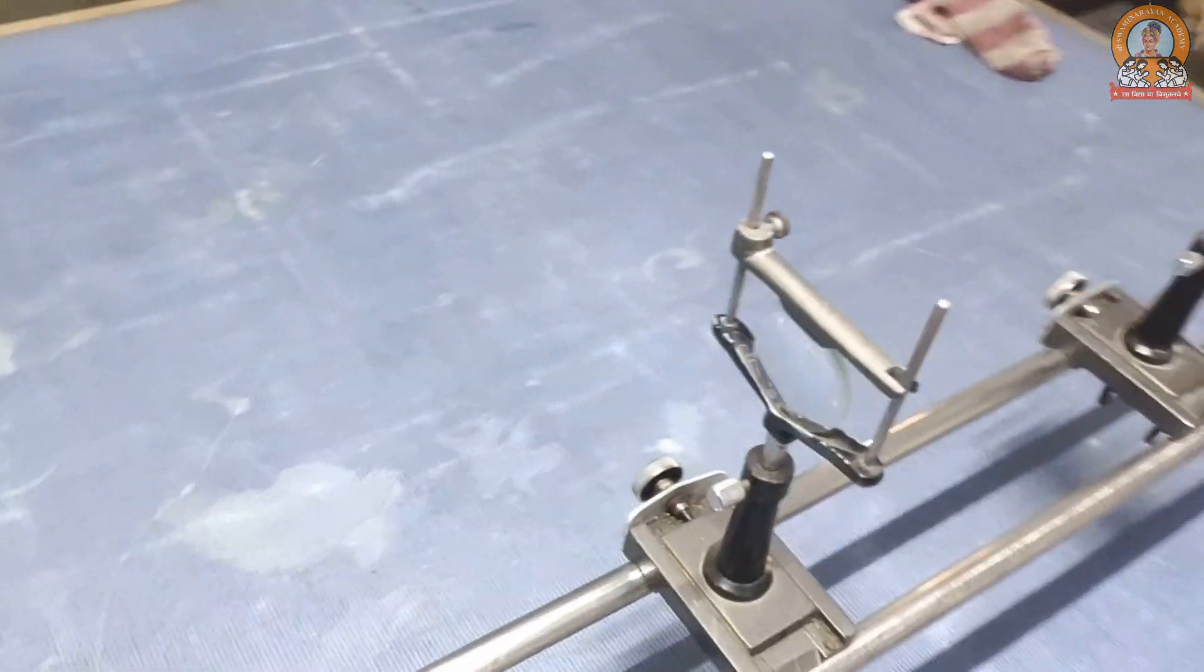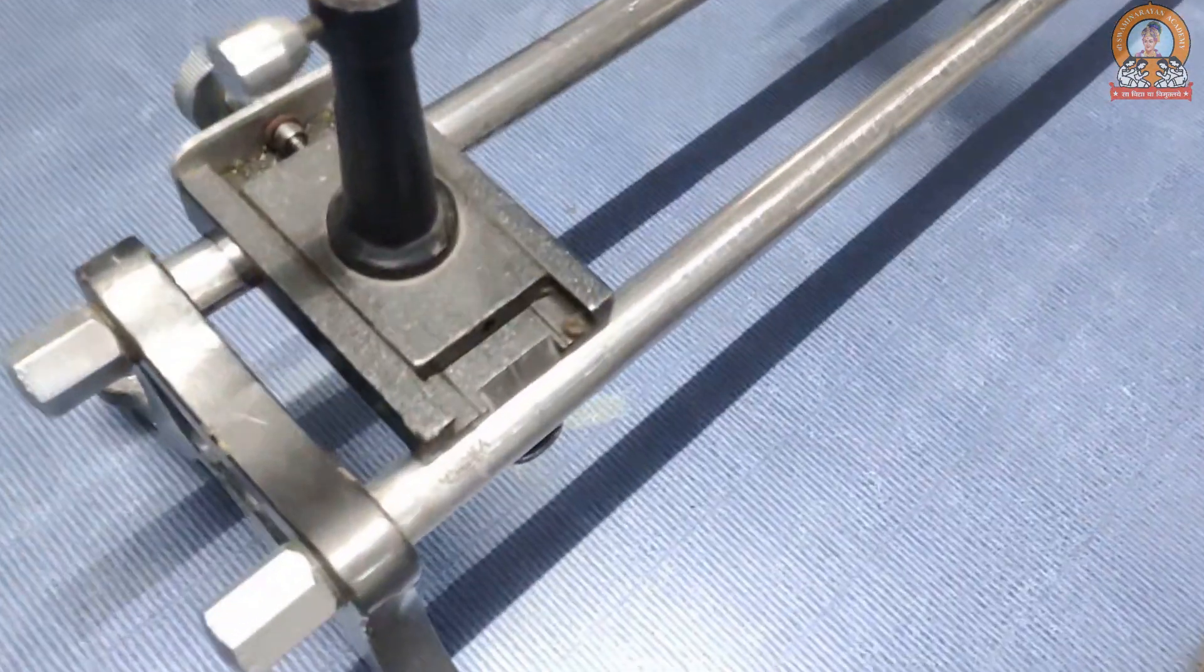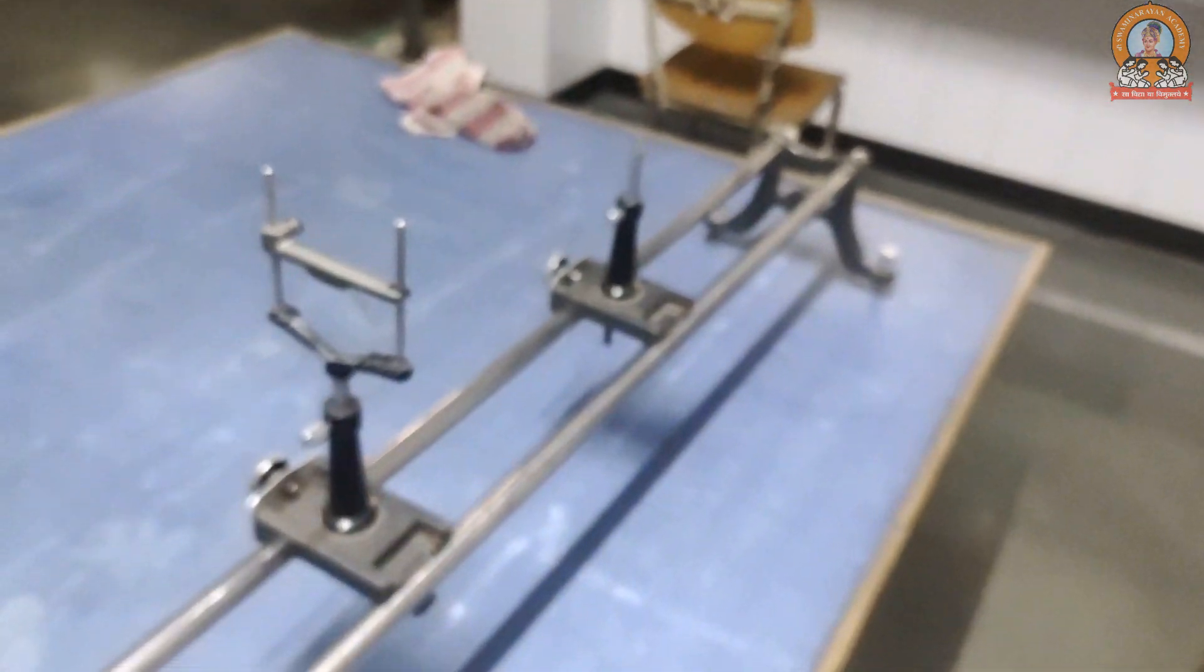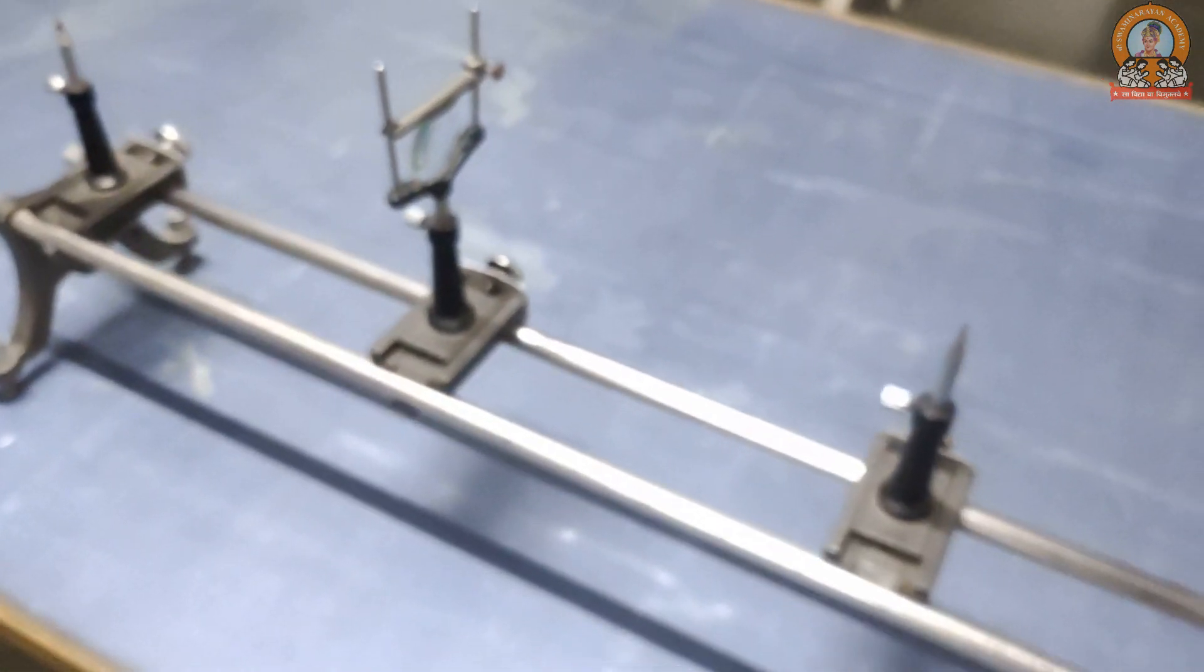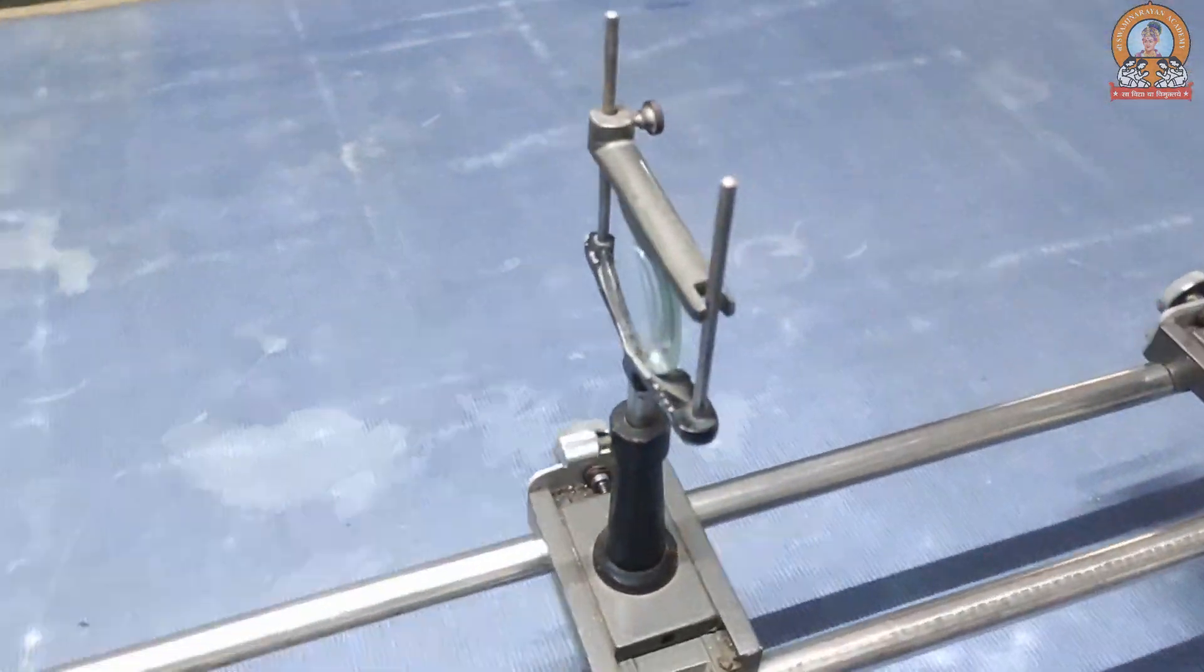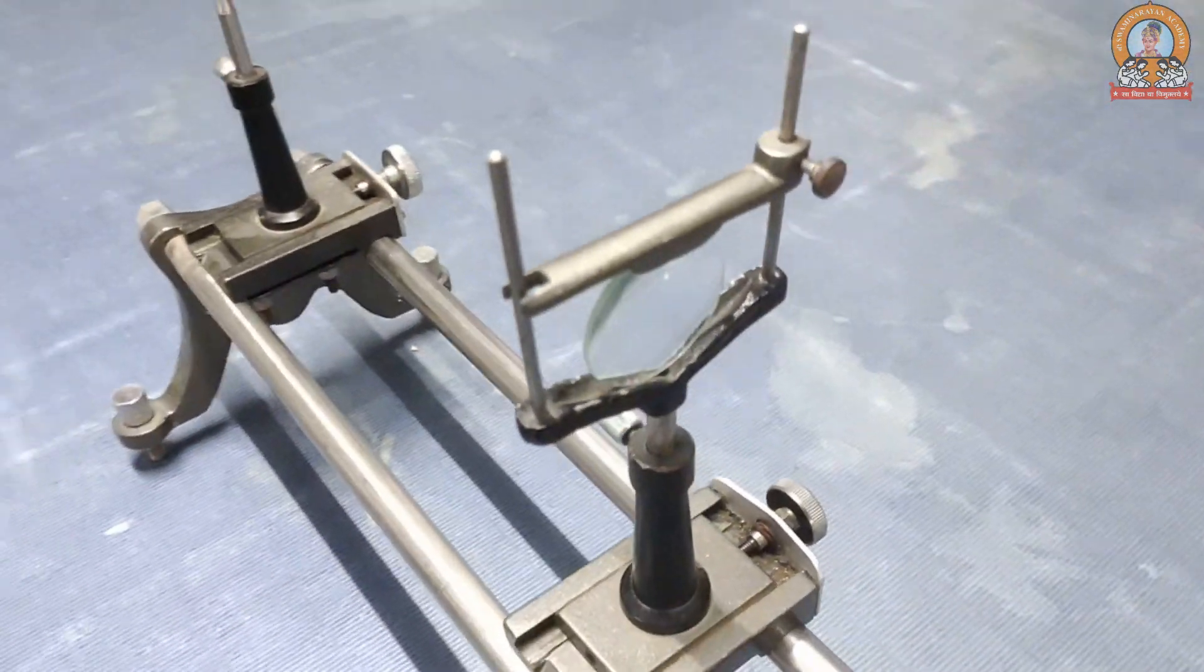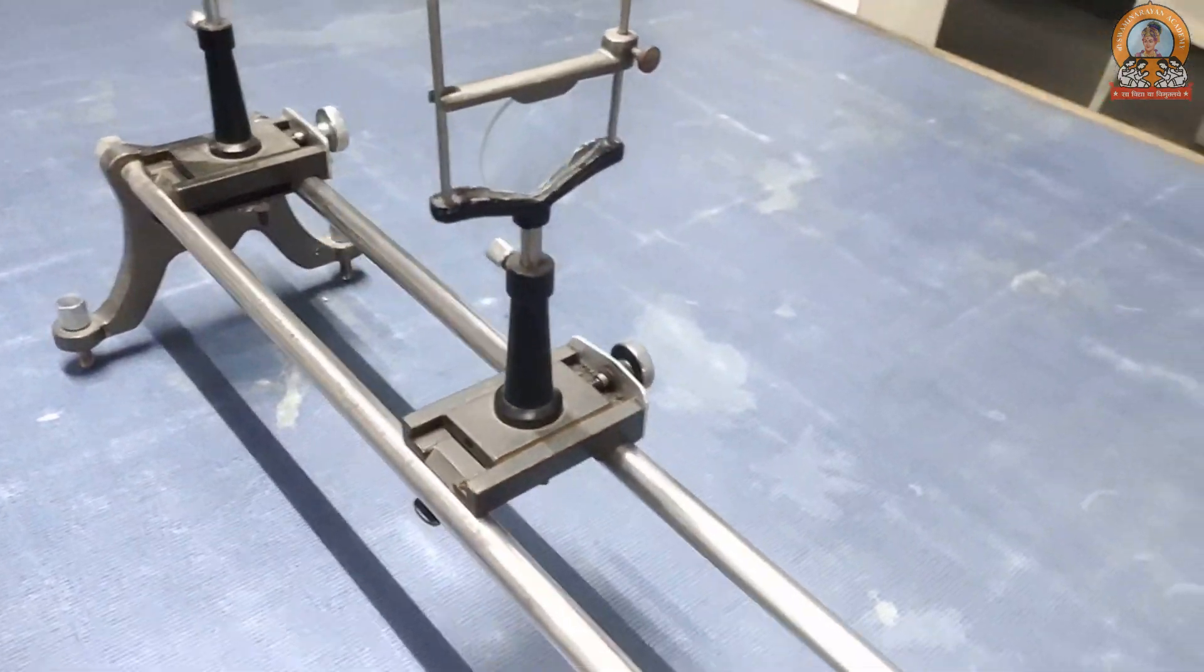Our first step is that we will keep the object at 0, then the lens, and then the image needle. This is the object needle, this is the image needle, and in between the lens is there. This particular lens's rough focal length we find out and it came out to be 16 centimeter.